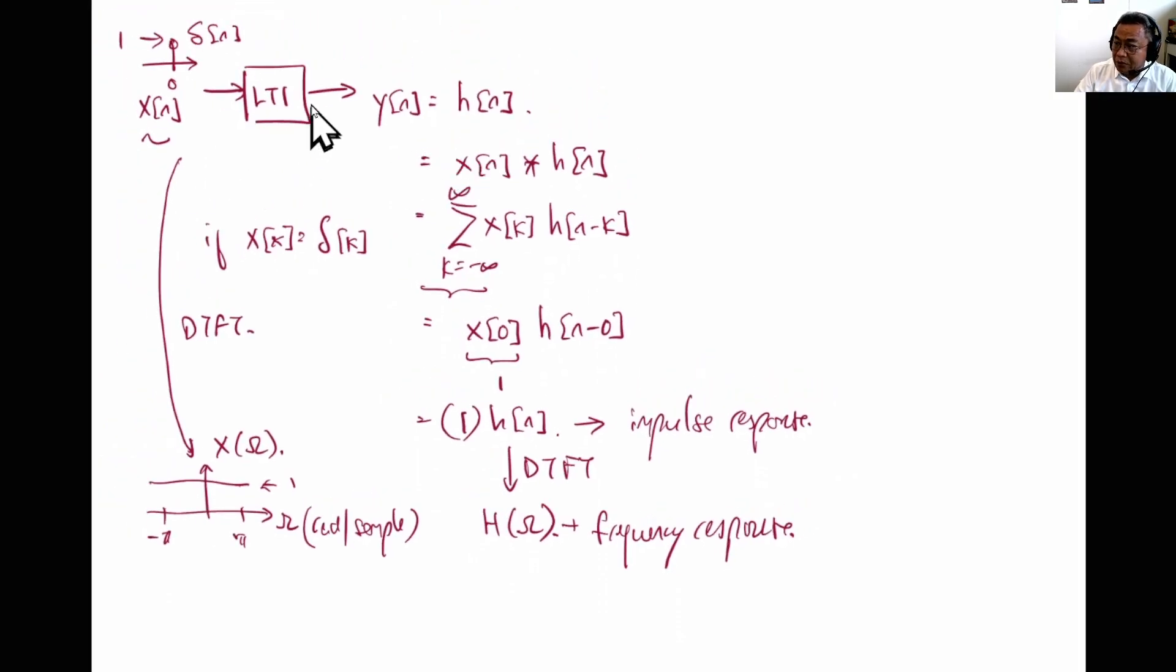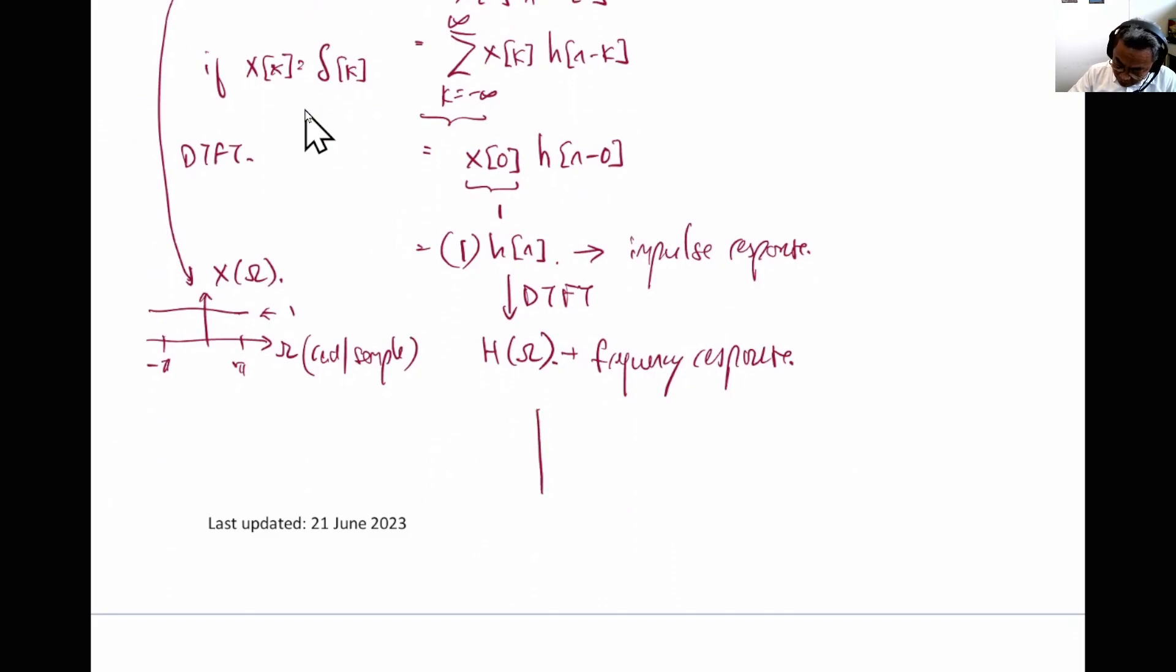Let's have an example of a frequency response. For example, a frequency response has this shape from -π to π for the amplitude, and for example, this shape for the phase.